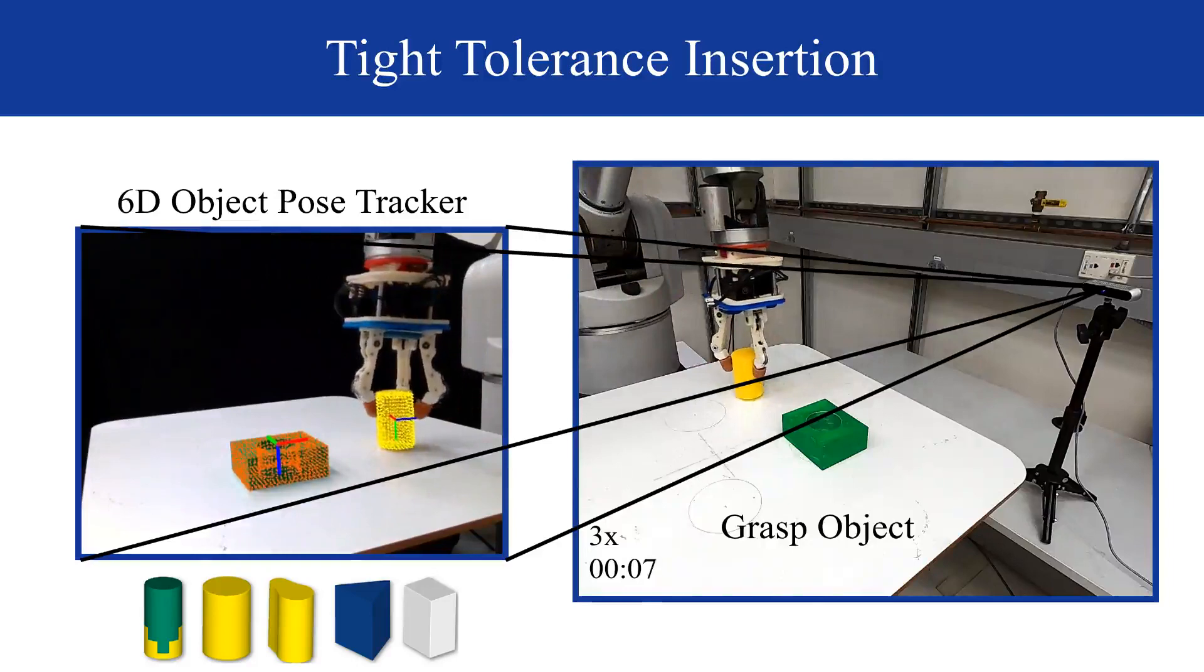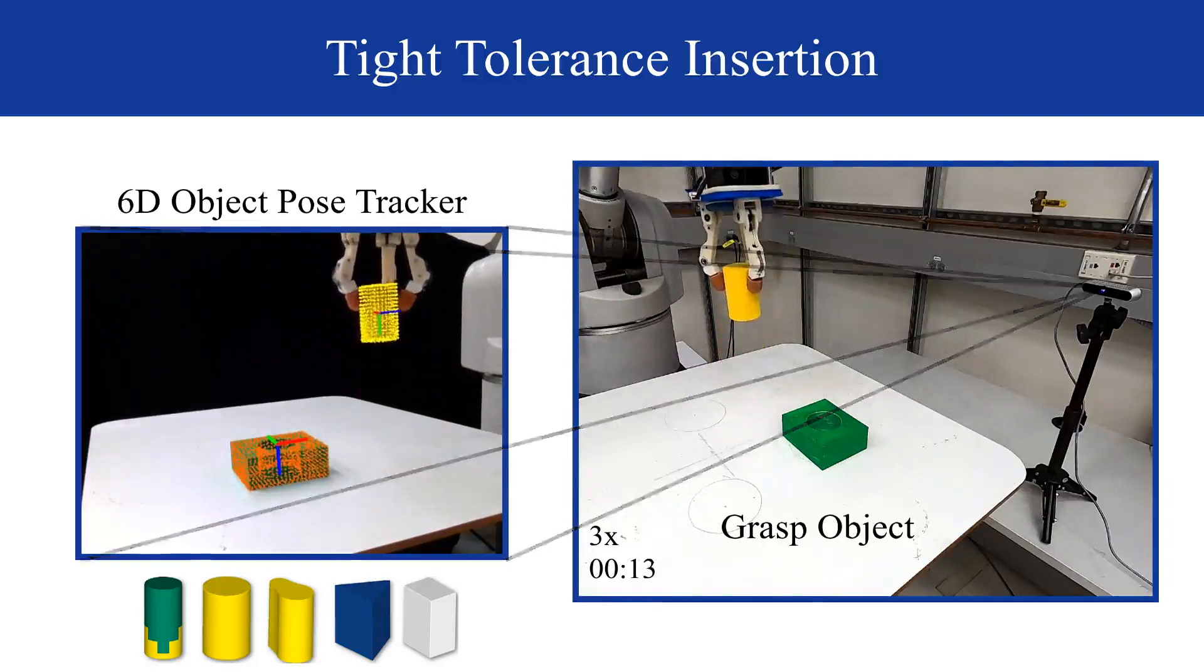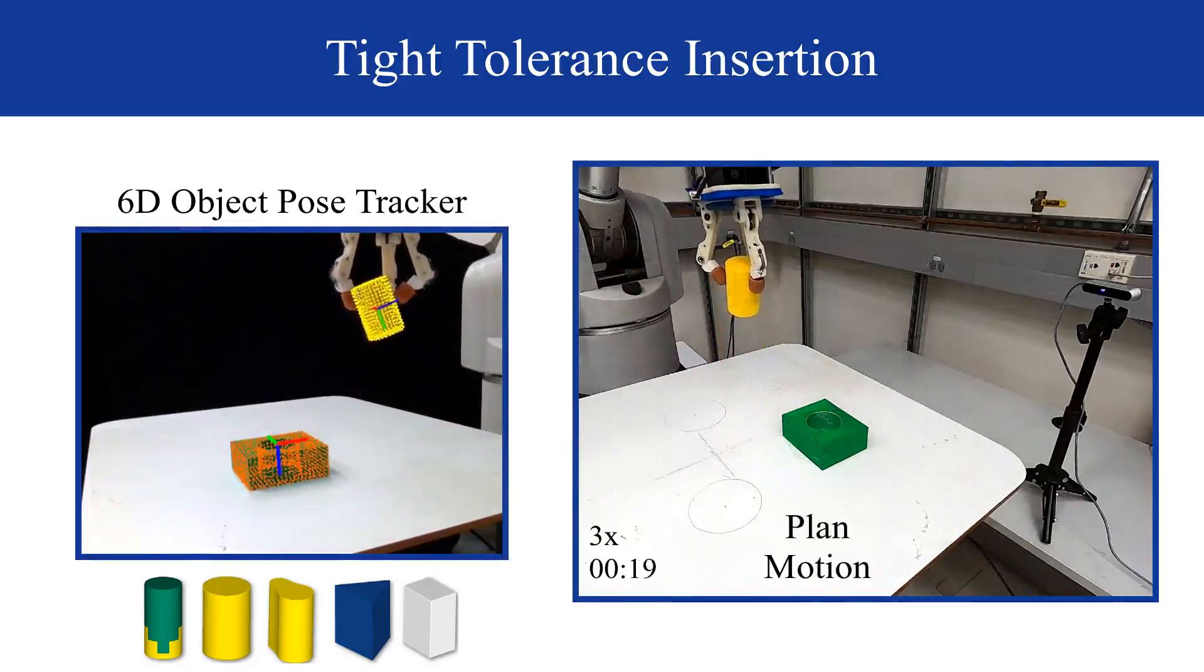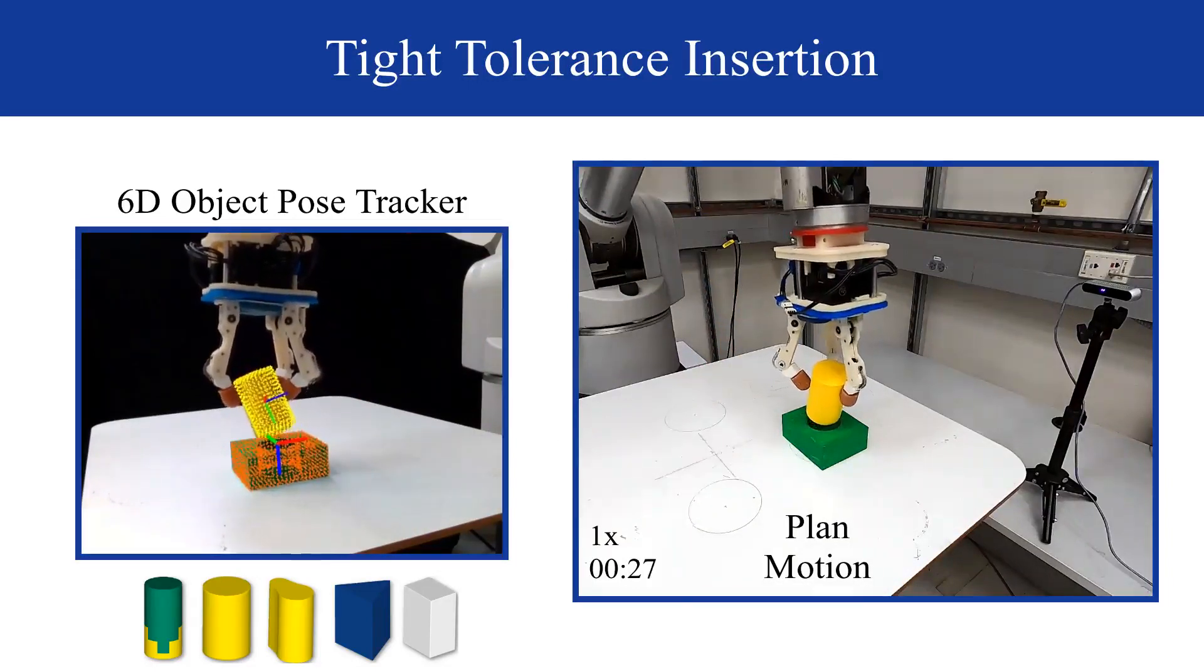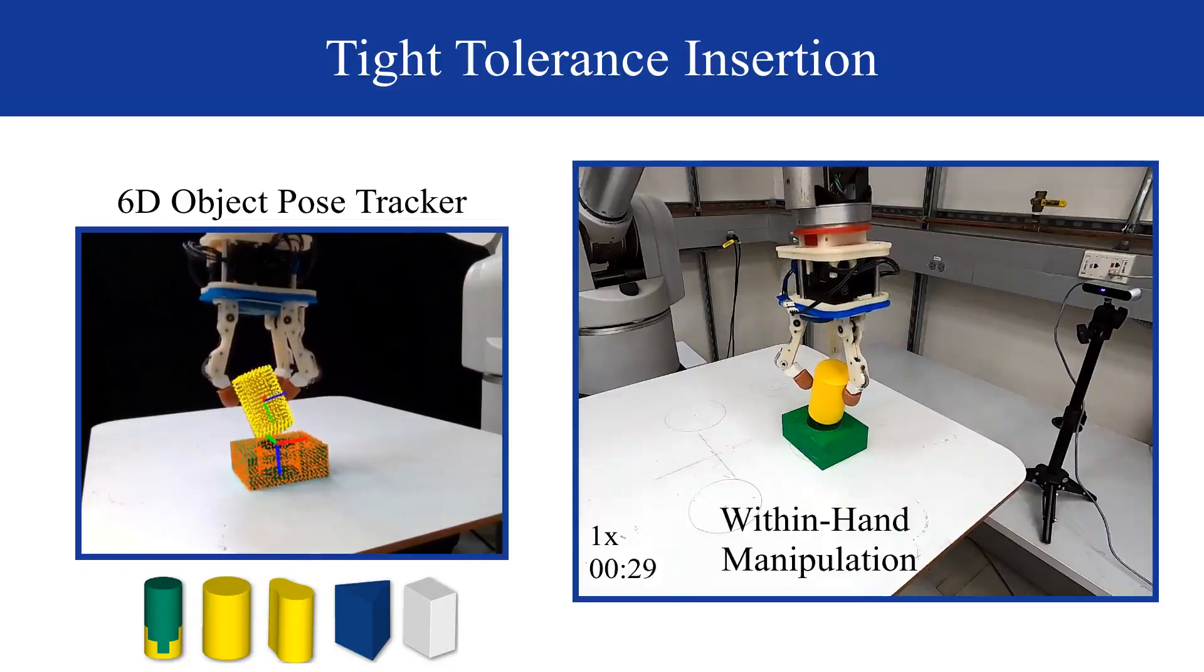We complete insertions of five different 3D-printed objects, each with less than 0.25 mm of hole tolerance, as depicted in the bottom left. This task of tight tolerance insertion highlights the three main goals of this work.